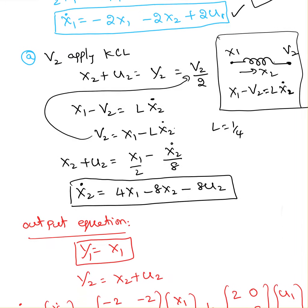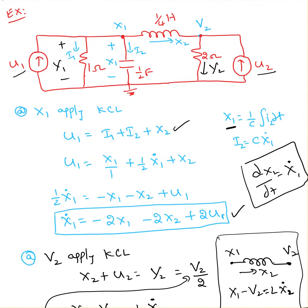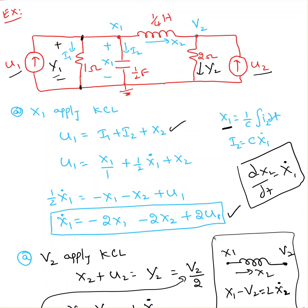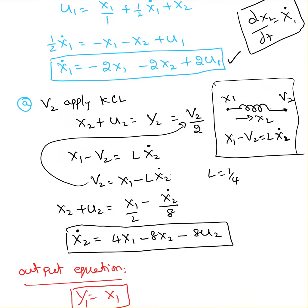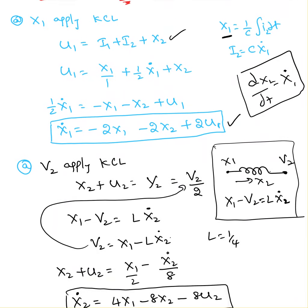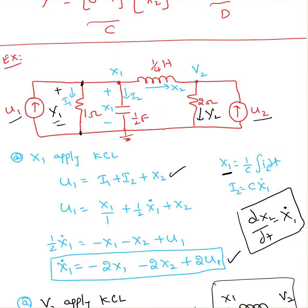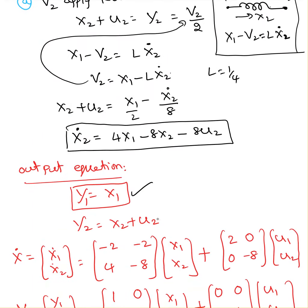For the output equations: y1 is the voltage between the two points, which is the same as x1, so y1 equals x1. For y2, the current x2 is coming in and u2 is coming in, so y2 equals x2 plus u2. So we have two state equations and two output equations.